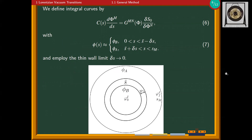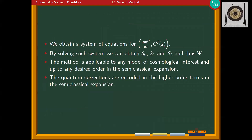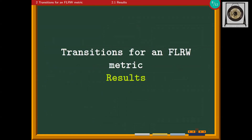We consider integral curves on the configuration space parameterized by an arbitrary parameter s, describing the configuration of a true vacuum bubble inside a background of the false vacuum. With this general setup, we obtain a system of differential equations solvable in general, yielding solutions to the Wheeler-DeWitt equation and transition probabilities for any cosmological model to any desired order. Higher order terms in the semi-classical expansion are the quantum corrections.